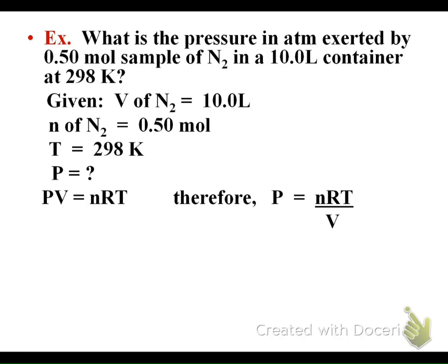Let's look at an example problem. What is the pressure in atmospheres exerted by 0.5 moles of nitrogen in a 10 liter container at 298 kelvin? Our givens are volume is 10 liters, number of moles is 0.5 moles, temperature is 298, and we're asked to find P. Write out PV=nRT and fill in your values.